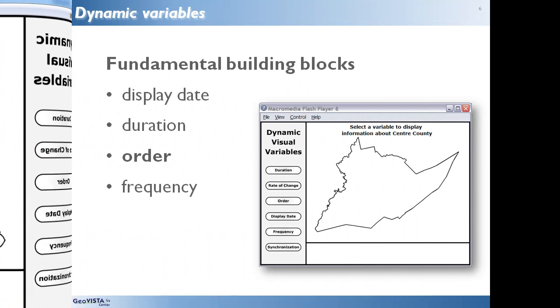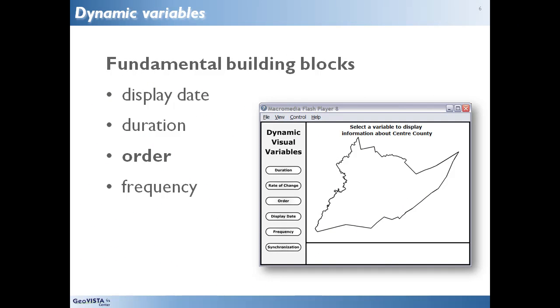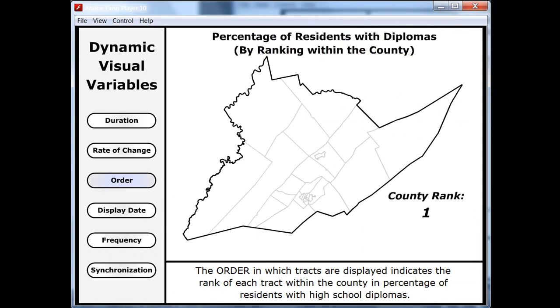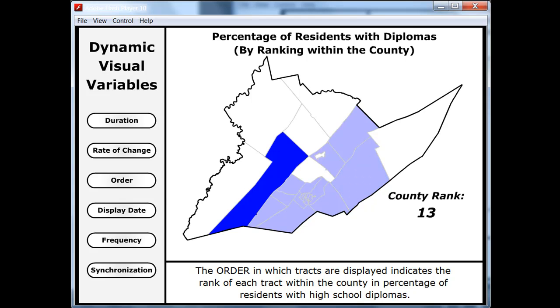In addition to controlling when and for how long a sign vehicle will be visible or will maintain a particular appearance, dynamic display designers can control the order in which multiple referents are signified. In this simple example, census tracts in Centre County, Pennsylvania again are ranked according to the percentage of residents holding a high school diploma. We start with the highest rank and move toward the lowest rank. In this display, position in the rank is signified by the order in which bright blue is displayed within the tract. The rank is also redundantly signified by duration of the light blue that remains in the tract as we move on from rank to rank. The longer durations signify the highest rank.